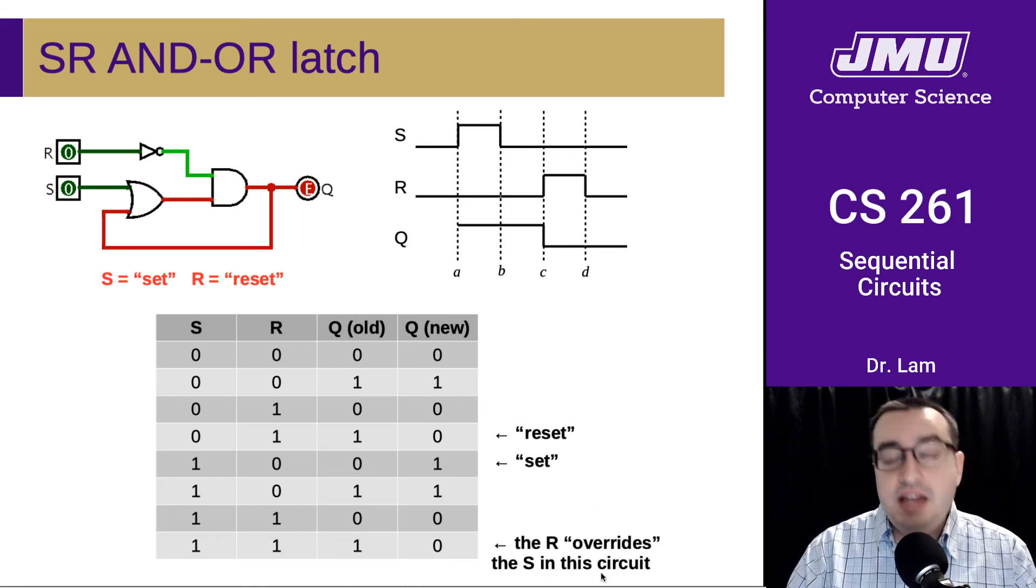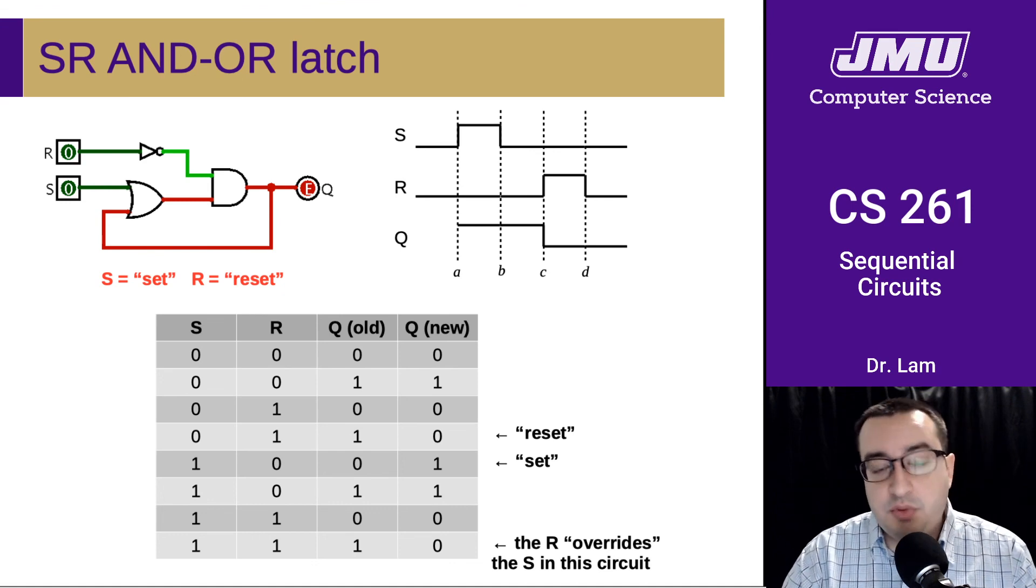A couple other things to note here is that there is also this interesting situation where S and R are both on. And in this particular circuit, we can see, if you were to work this out, you would see that in this case, the R kind of overrides the S. Because if they're both on, if it's a zero, it stays zero. But if it's a one, it gets changed to a zero. So in this particular case, that's what happens when they're both the same.